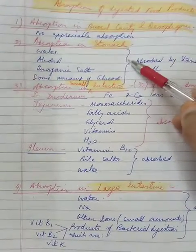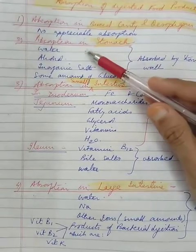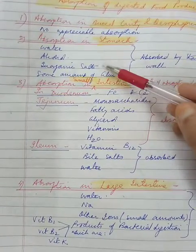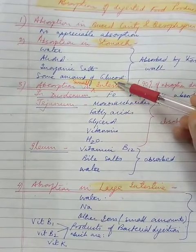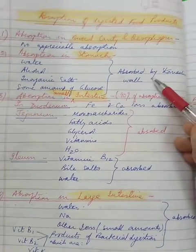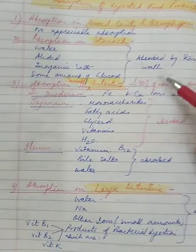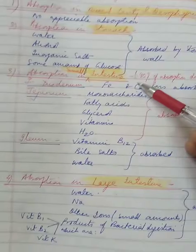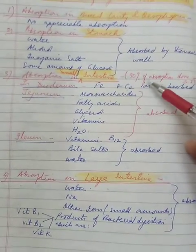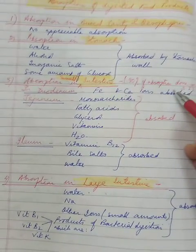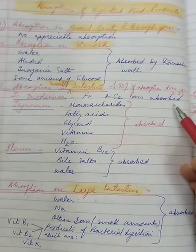But when the food comes to stomach, water, alcohol, inorganic salts and some amount of glucose, they are absorbed by the stomach wall. As the food reaches the small intestine, here about 90% of absorption is completed.